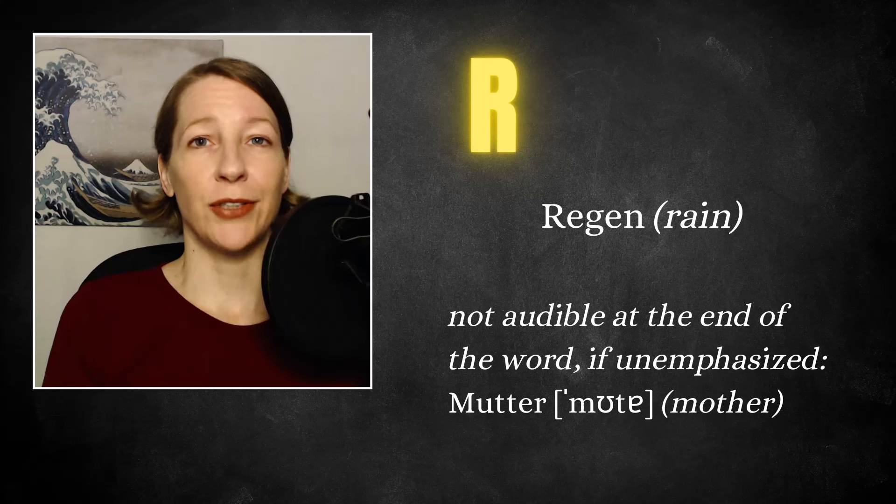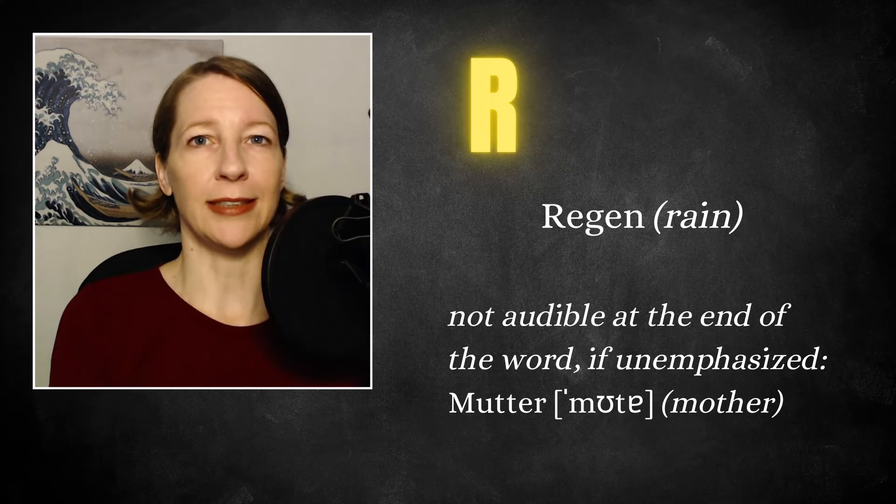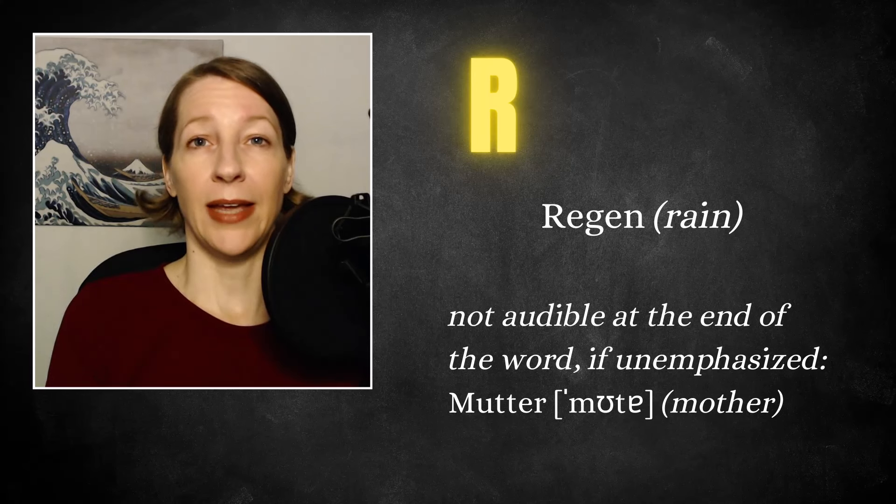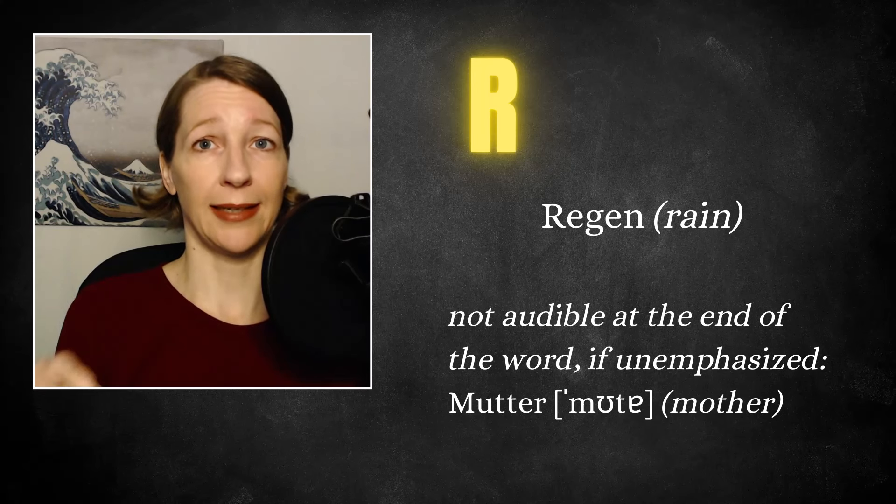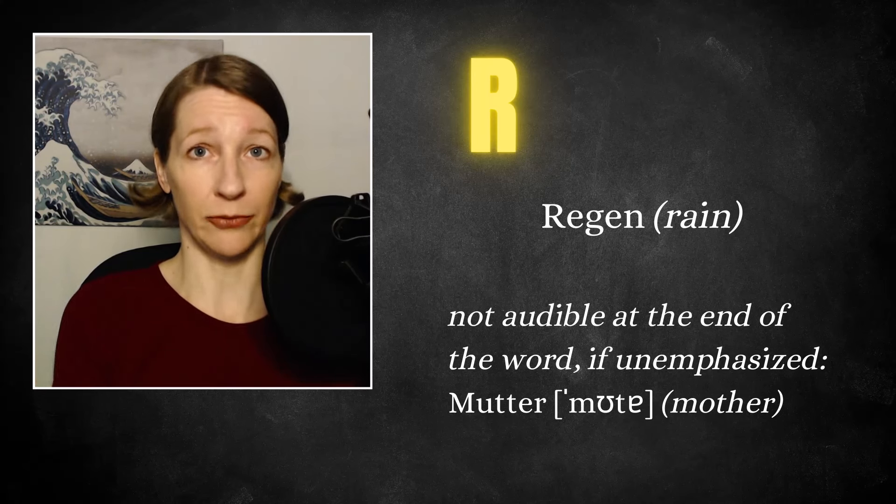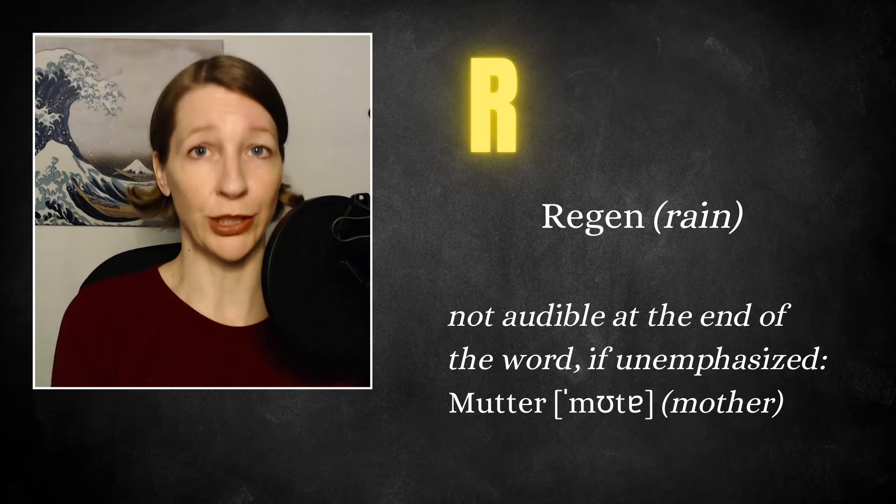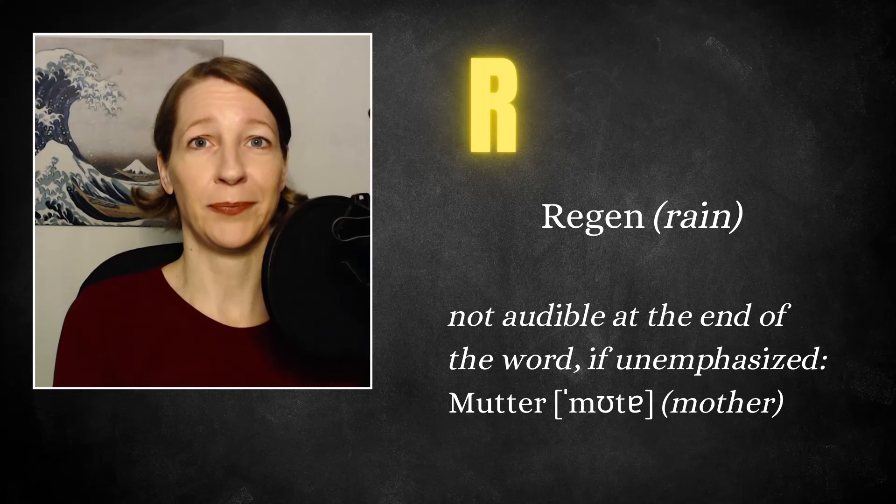When you encounter the R at the end of a sentence, so when you have this combination ER, then we don't really pronounce the R at all. It's an unemphasized syllable. For example, if you use the word Mutter. Mutter has an ER, but the emphasis is on the U. Mutter. You cannot hear the ER at all. It's a little bit like the schwa in English.